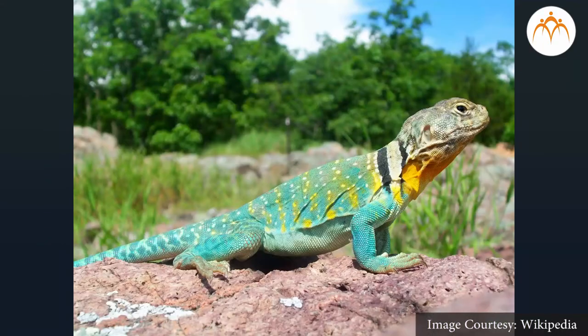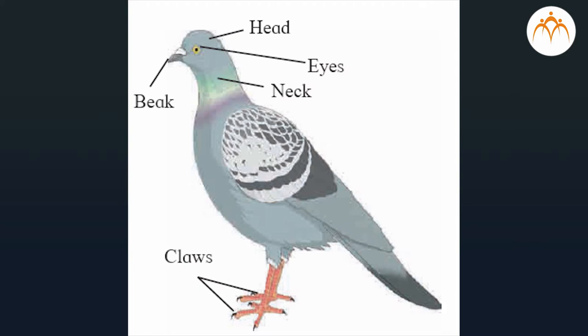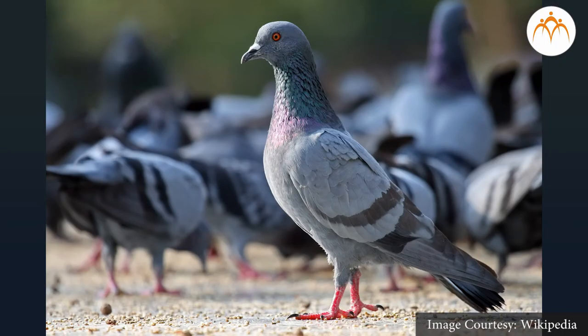Class Aves: these vertebrates are completely adapted for aerial life. These are warm-blooded (homeotherms), meaning they can maintain their body temperature constant. Their body is spindle-shaped to minimize air resistance during flight. Four limbs are modified into wings. Digits are covered with scales and bear claws. Exoskeleton is present in the form of feathers. Neck is present between head and trunk. Jaws are modified into a beak. Examples: peacock, parrot, pigeon, duck, penguin, etc.